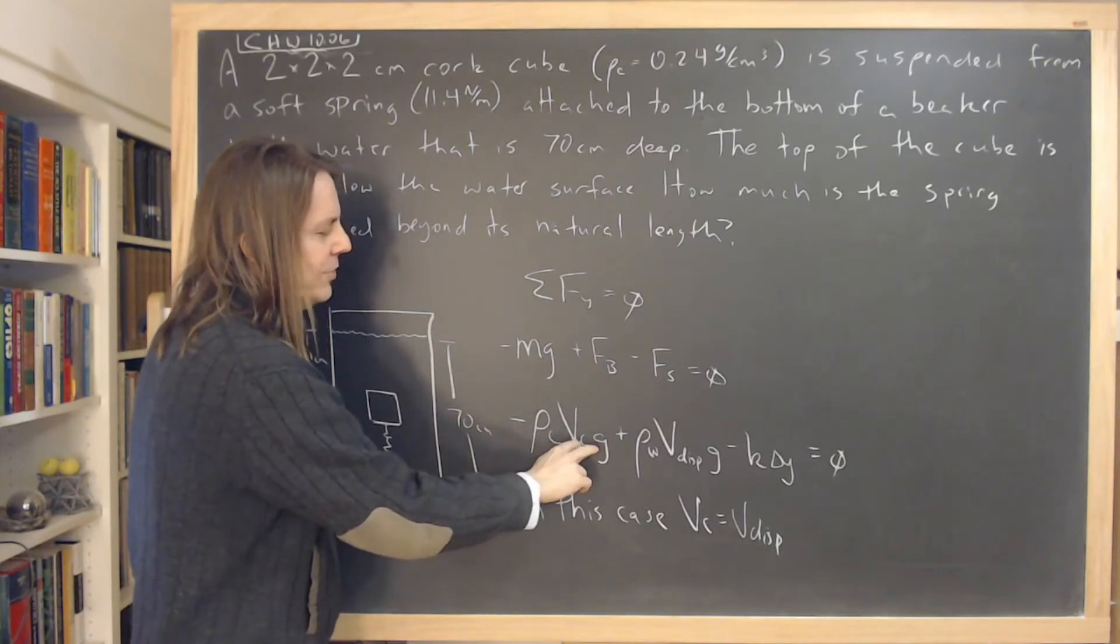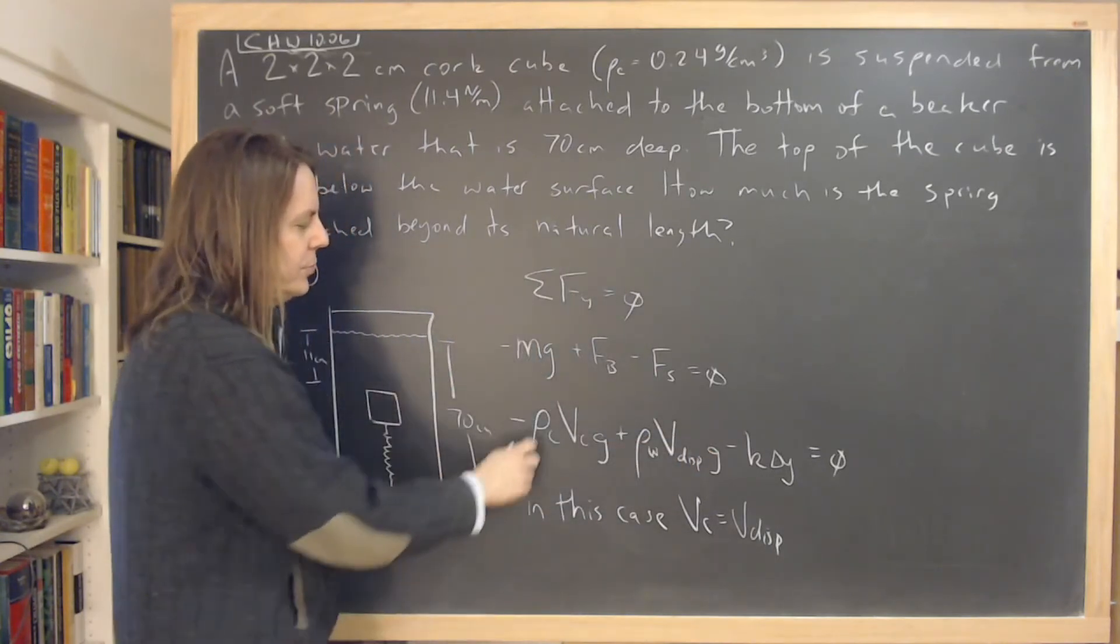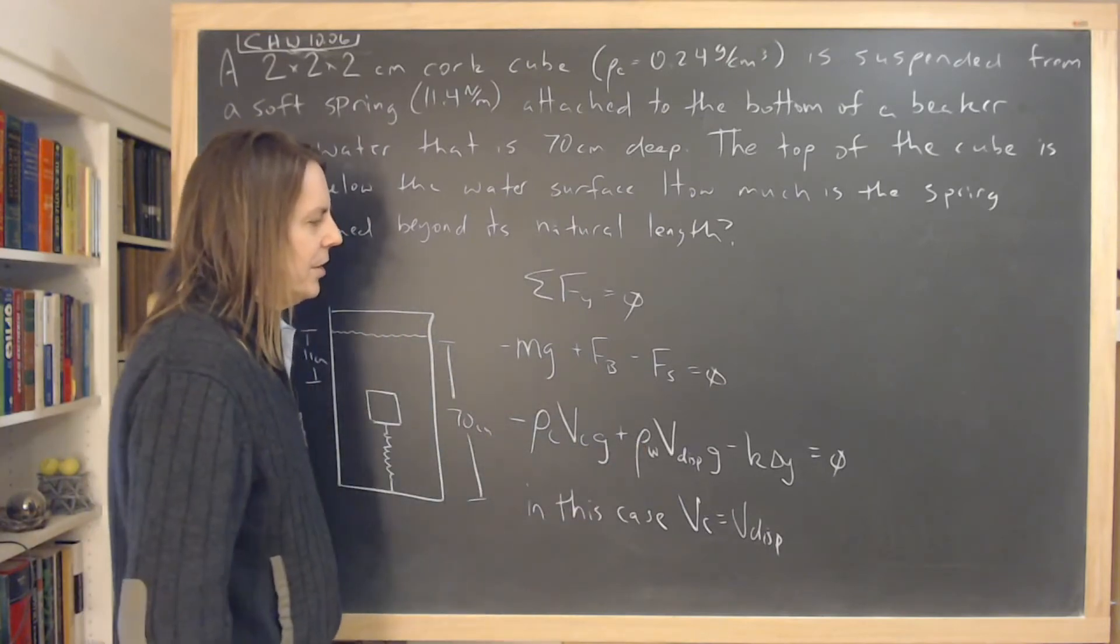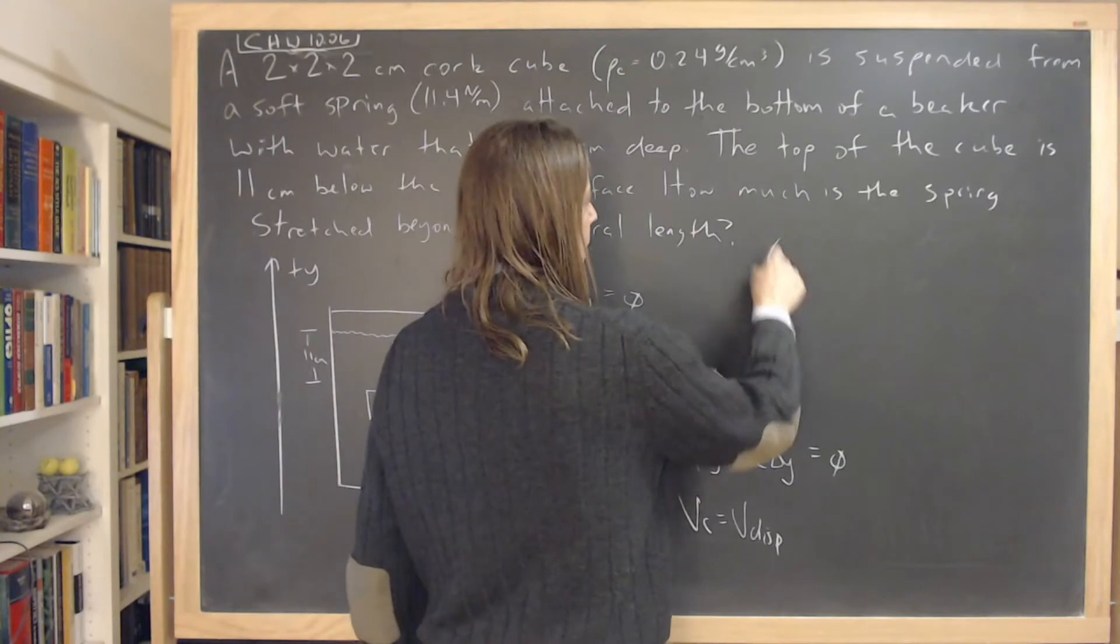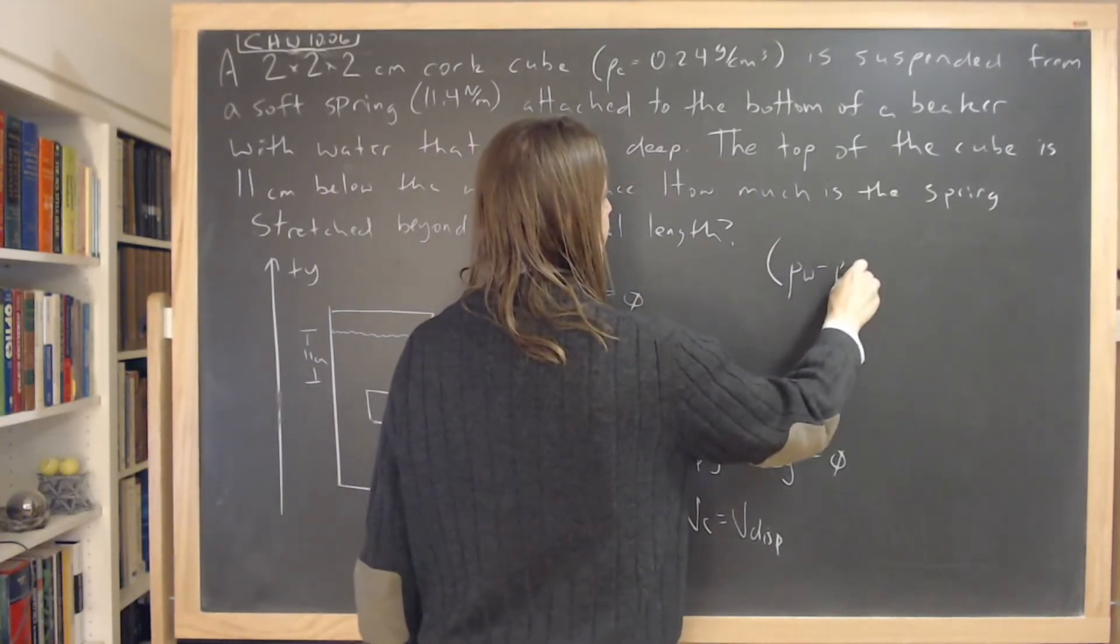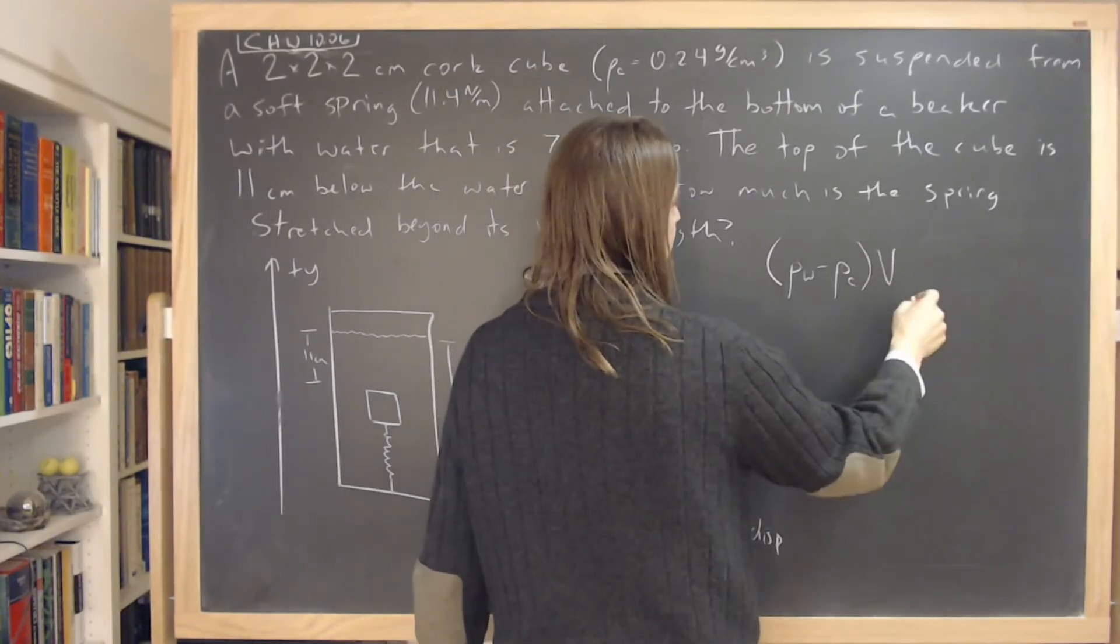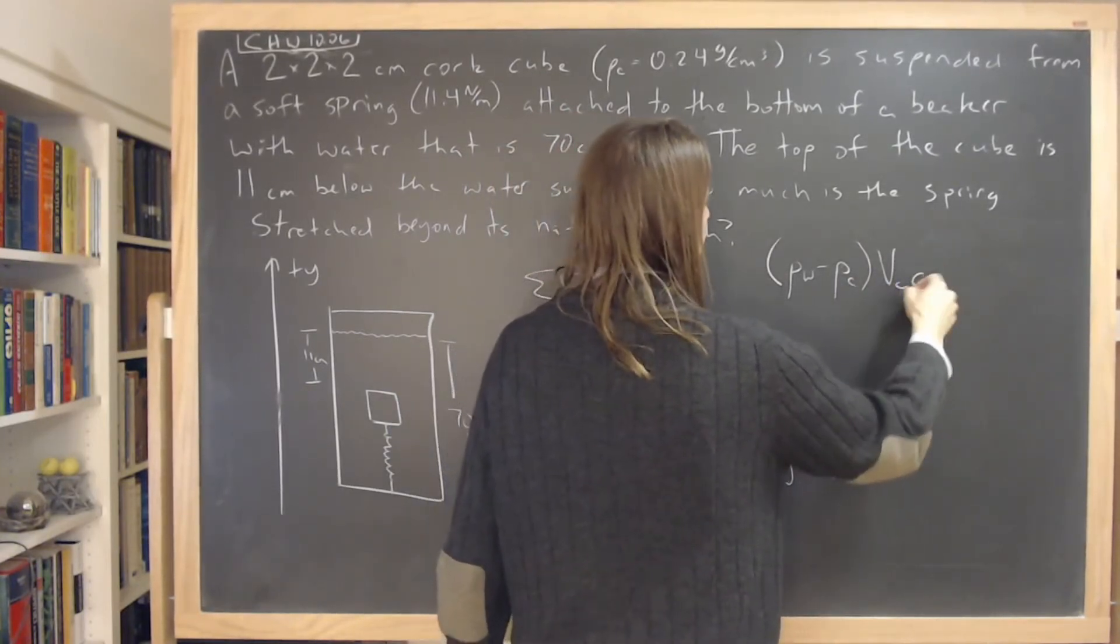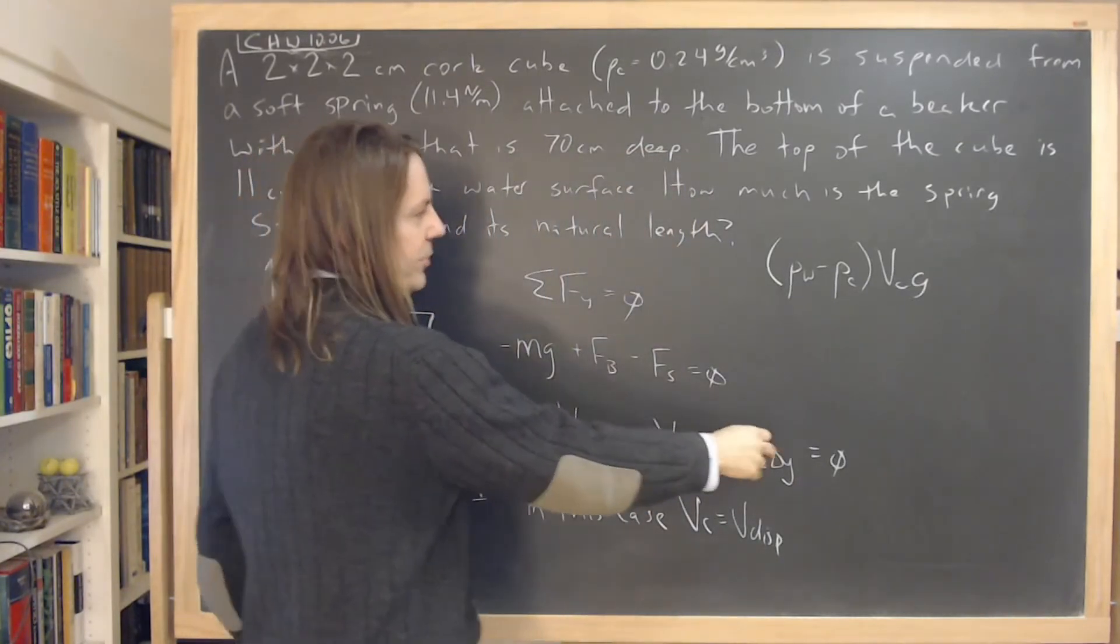the v and the g go together, you can pull out the two densities. So we can simplify this a little bit and say that it is equal to the density of water minus the density of cork times that total volume of cork of the whole thing times g. So that minus that, and that equals k delta y.